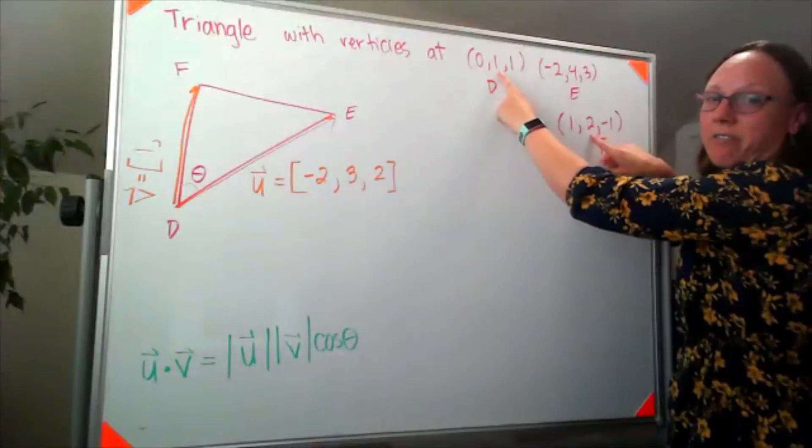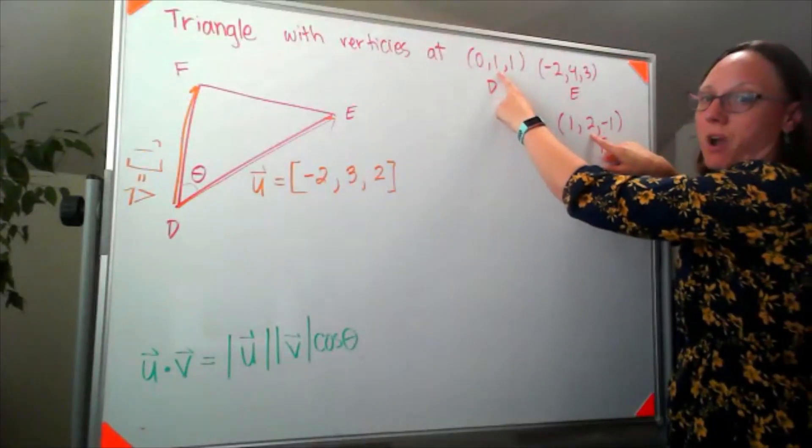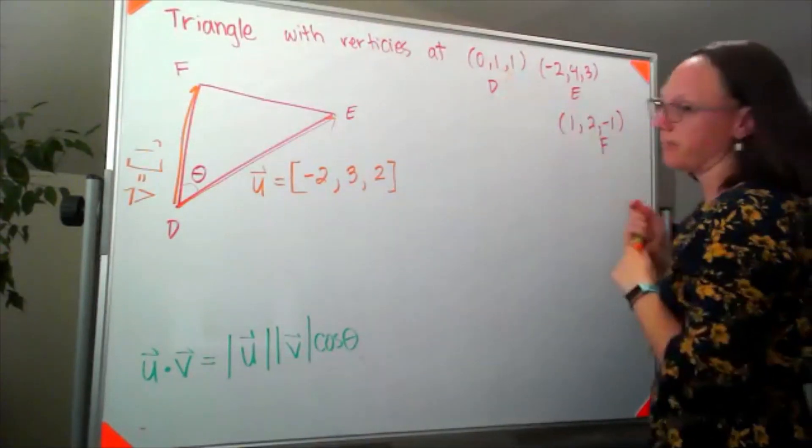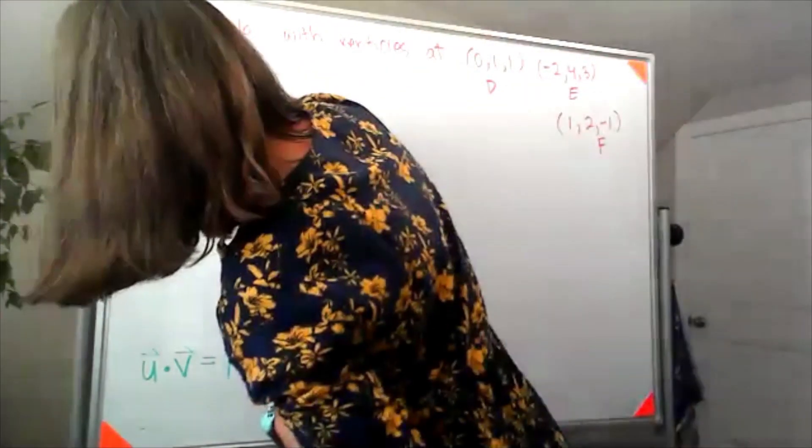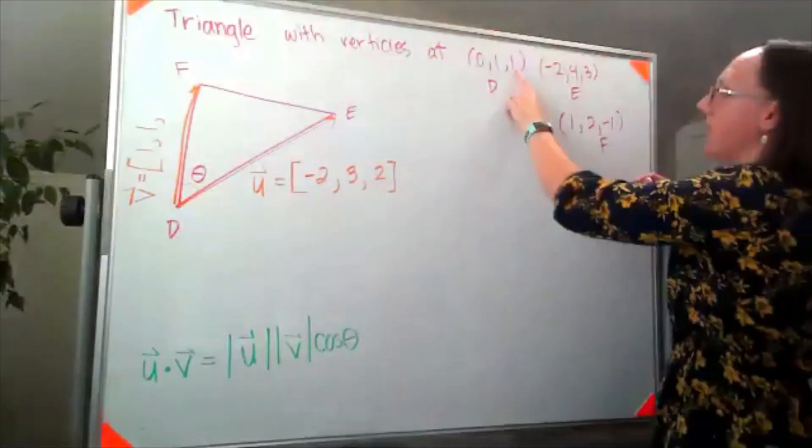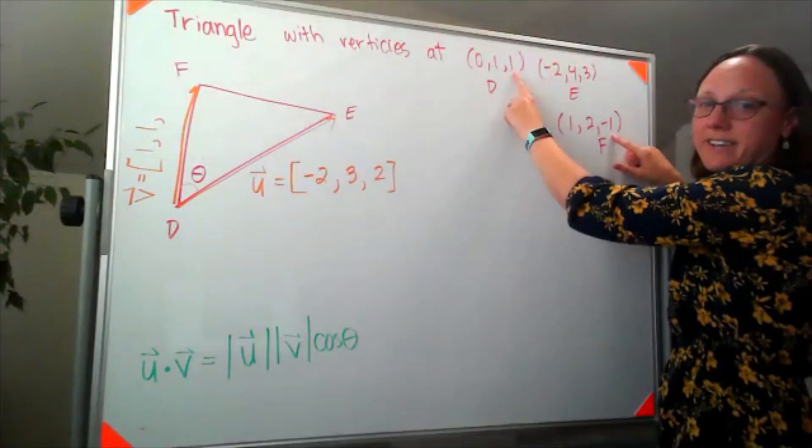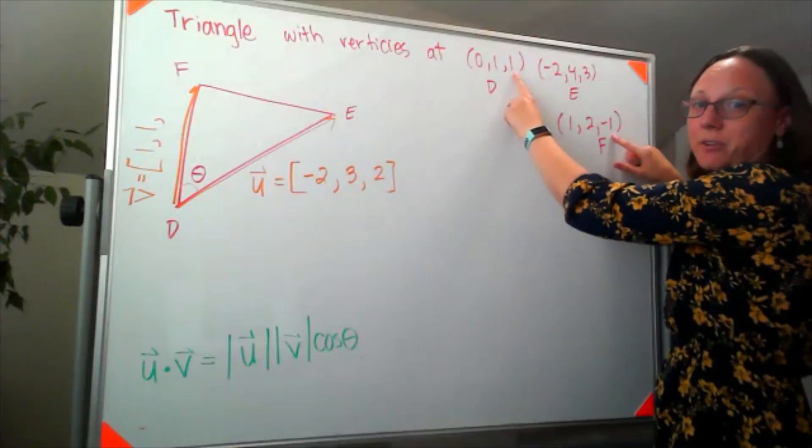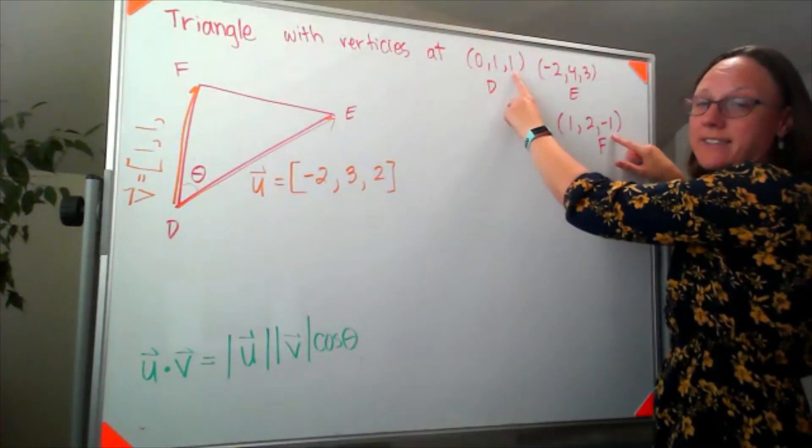I'm standing at one and I have to get to two, so I need to move positive one in the y direction. I'm standing at one and I have to get to negative two, that means I have to move negative two in the z direction.